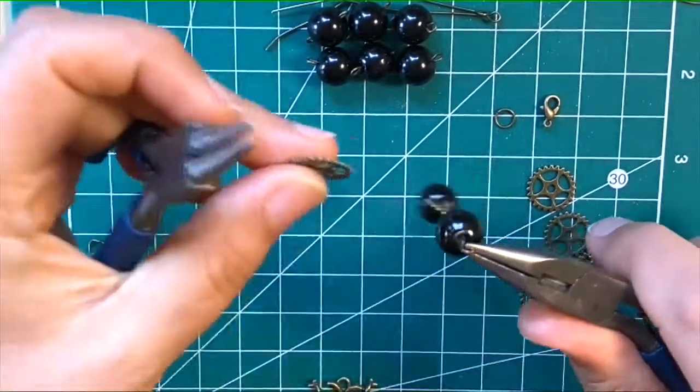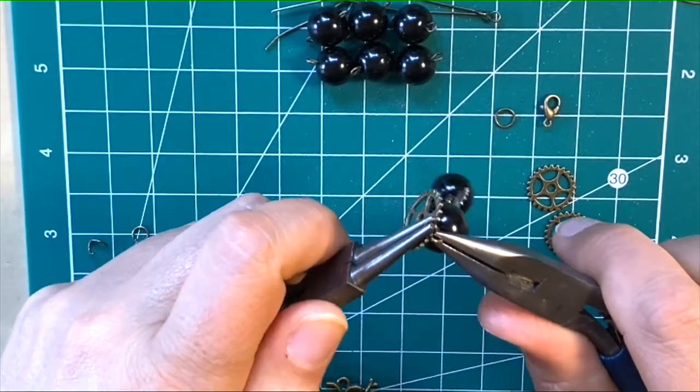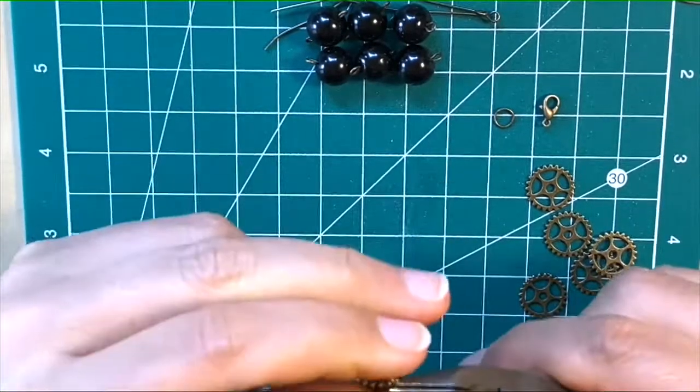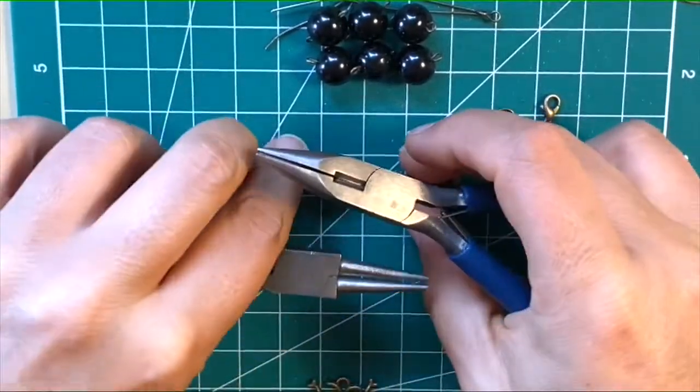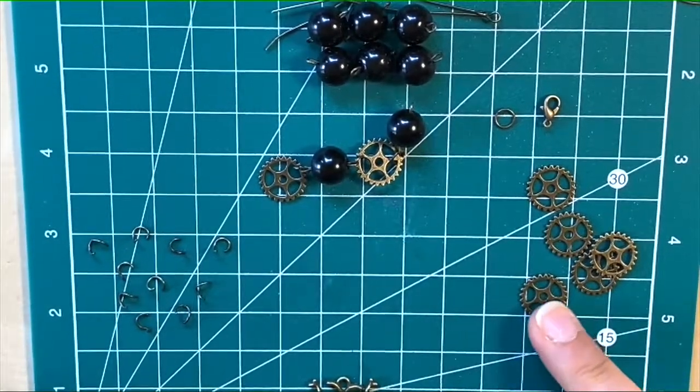I'm going to add a cog, then quickly twist and push that together. We continue along in the same fashion until we've completed our necklace with all of the cogs, gears, and beads.